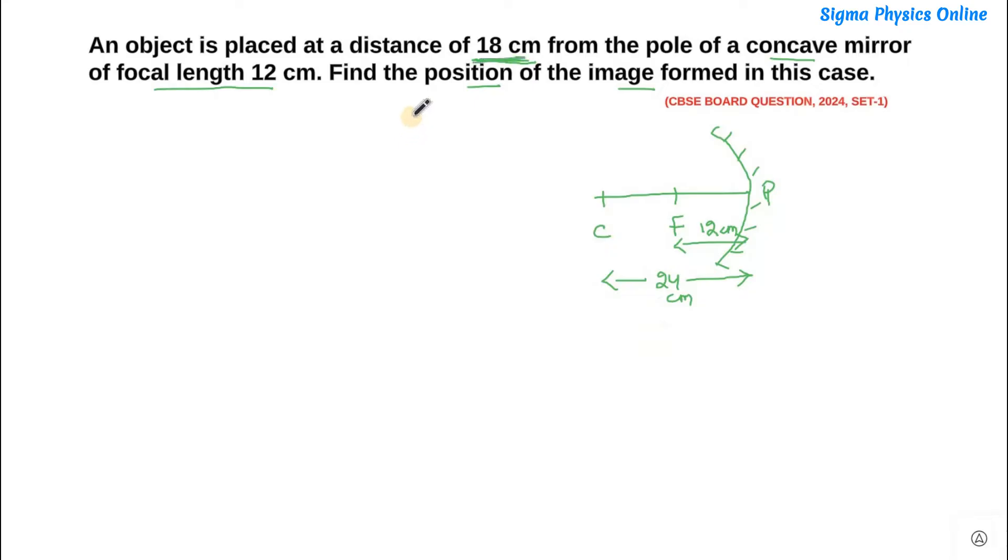So the center of curvature is at a distance of 24 cm from the pole of the concave mirror. Now our object is situated at a distance of 18 cm from the pole. That means our object is lying in between C and F, that is here. It's at a distance of 18 cm. So now we have to find out where will the image be formed.